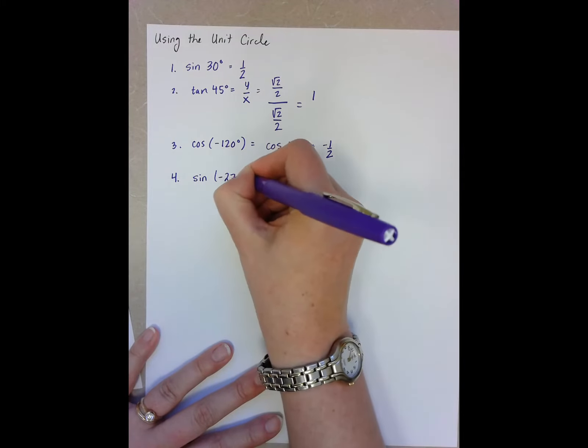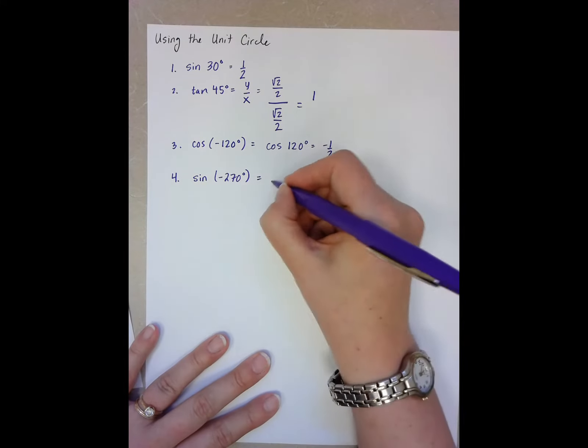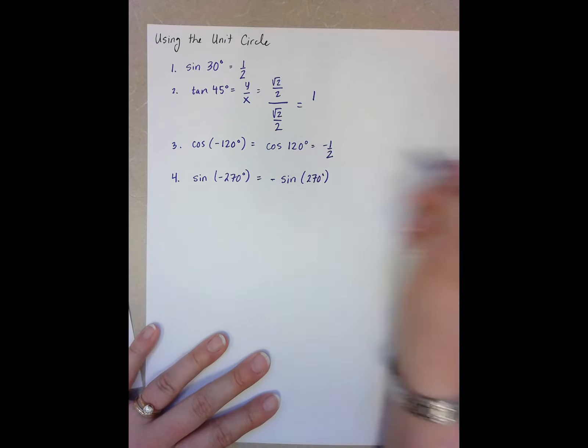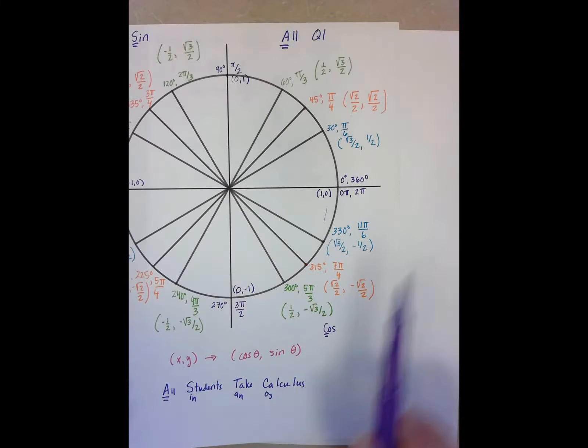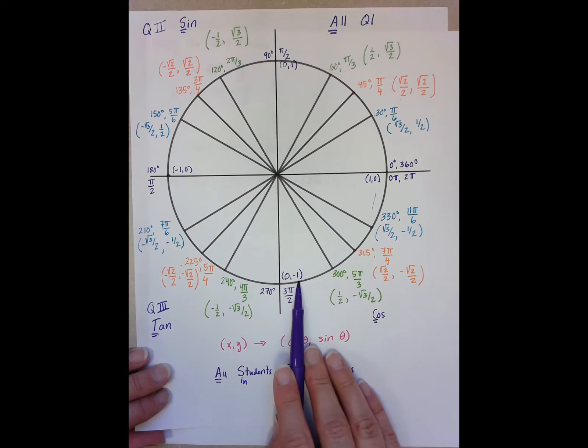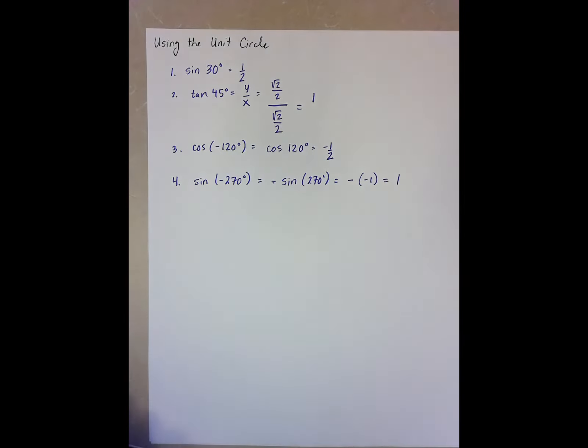Sine of negative 270 degrees. Well, we know that sine of a negative angle is the negative of sine of that positive angle. We also know that sine of 270, sine is the y-coordinate. So the y-coordinate at 270 is negative one. So I have the negative of negative one, which equals positive one.